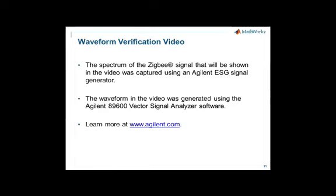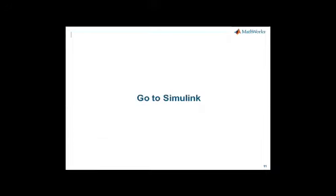We're not going to use a fully compliant Zigbee waveform — rather, we'll construct the part of the waveform most useful for designing this receiver, focusing on the spectrum, modulation, and pulse shaping filters. To verify that our waveform is representative of a true Zigbee waveform, we'll do a quick comparison to a video downloaded from the Agilent website to verify the spectrum. Then we'll move past that and focus on the receiver design.